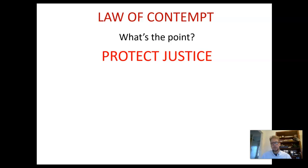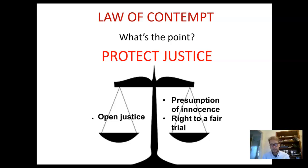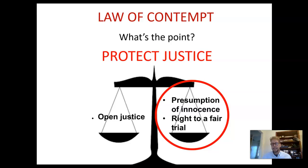The key point is protecting justice. We talked last week about the fundamental balancing act in law: on one side we have open justice and freedom of expression, and on the other we have the presumption of innocence and the right to a fair trial. It is that right to a fair trial which is absolutely core to the rules of contempt — they tell you what you can and cannot say when reporting on court cases.